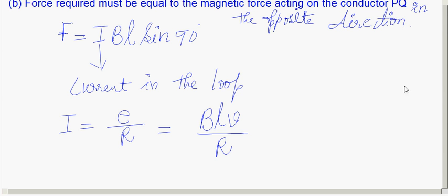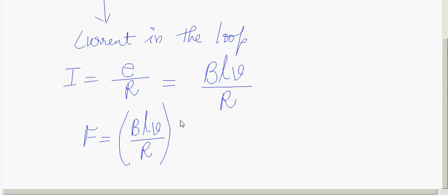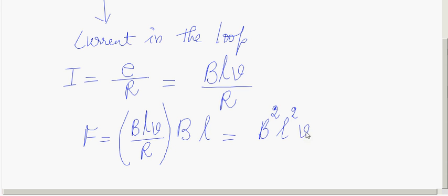F = IBL sin90° = IBL (since sin90° = 1). Substituting I = BLV/R, we get F = (BLV/R) · BL = B²L²V/R. The magnitude of the force required to move the conductor equals B²L²V/R.